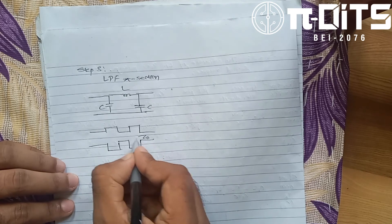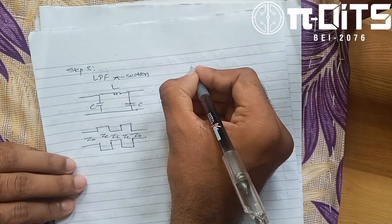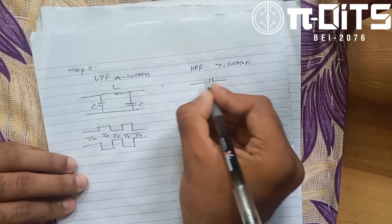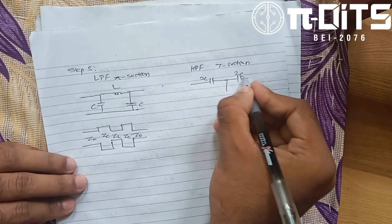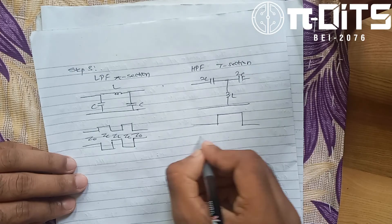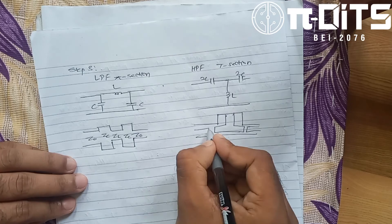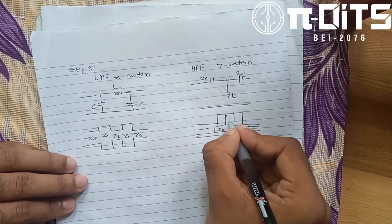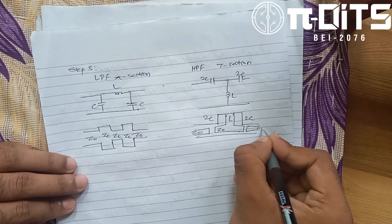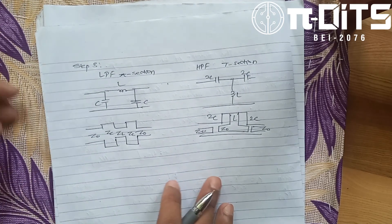Circuit realization: for a low-pass filter, the T-section uses elements z0, zc, zL, z0. For a high-pass filter T-section, the elements are yc, yc, L, z0. The filter design is now complete with these prototype circuit realizations.